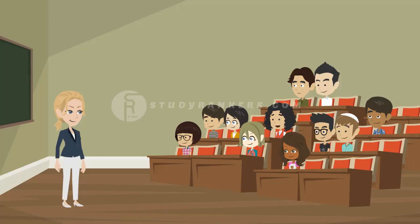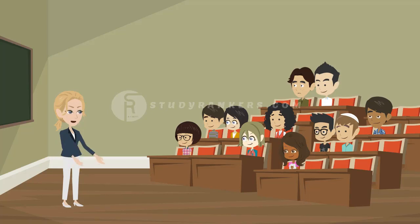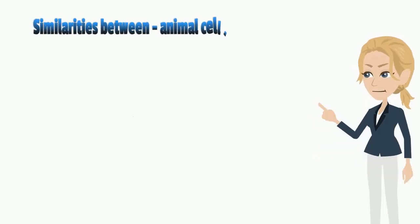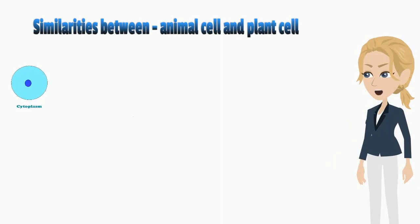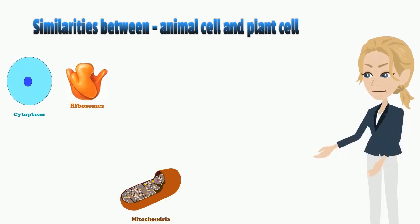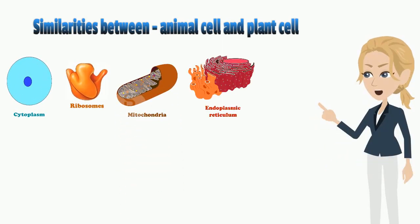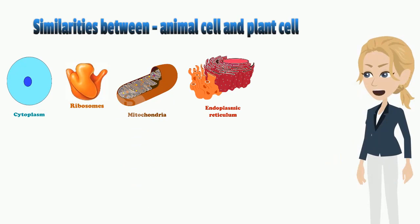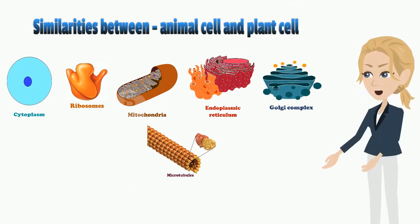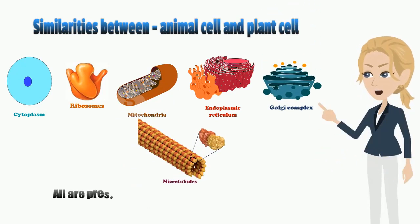Both plants and animals are made up of cells. Is there any similarities between both cells? Yes, students. Now, I am talking about the similarities between animal cell and plant cell. Cytoplasm, ribosomes, mitochondria, endoplasmic reticulum, golgi complex, microtubules, all are present in animal as well as in plant cell.